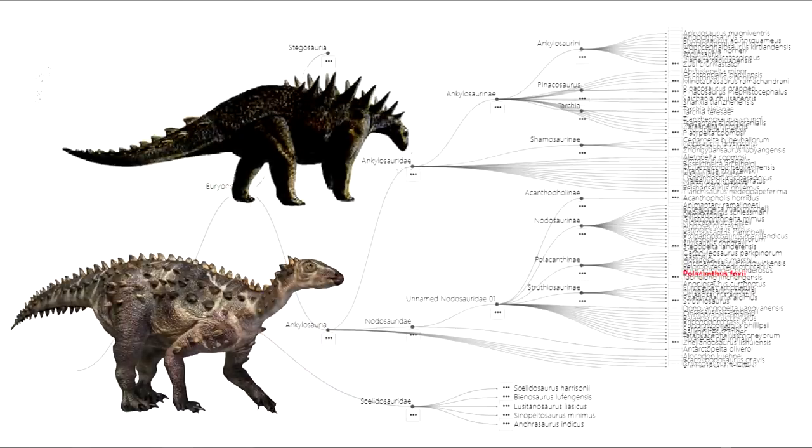Polacanthus reversed this pattern, with the forward nodules turning into spikes, which also start growing down the side of the animal. But the nodules toward the rear broadened into armor, except for the tail, which retained shorter blunted spikes.